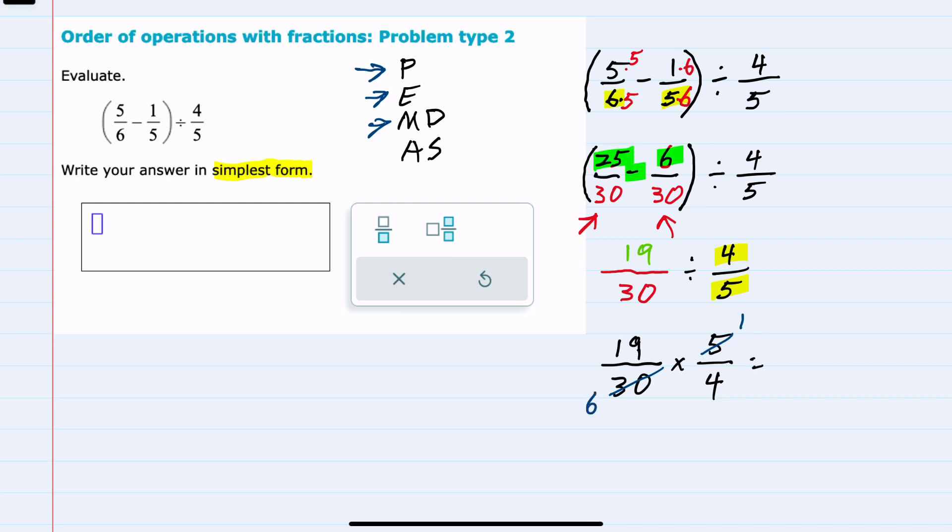And now if we continue multiplying across the top to get our numerator, 19 times 1 is 19. Multiplying across the bottom to get our denominator, 6 times 4 is 24. Is this solution in its simplest form? Yes. There's no common factor to cancel between 19 and 24. So 19/24 is our simplified solution.